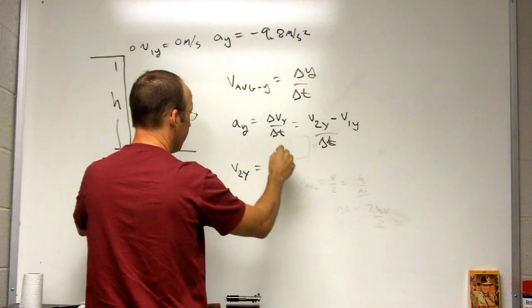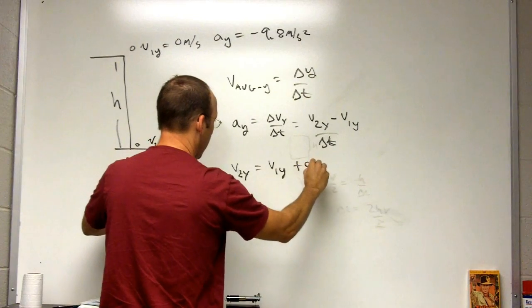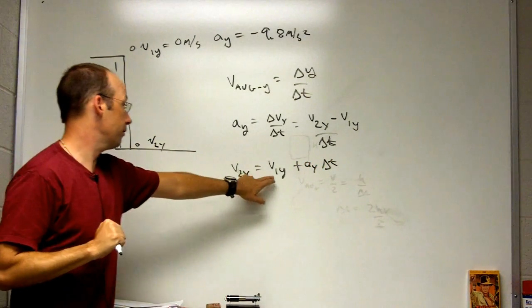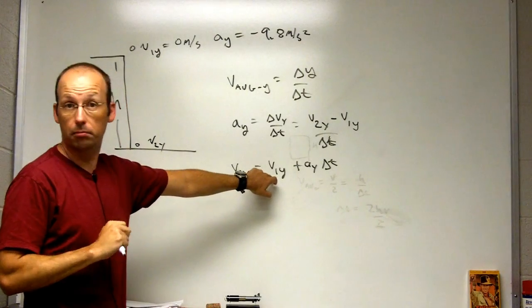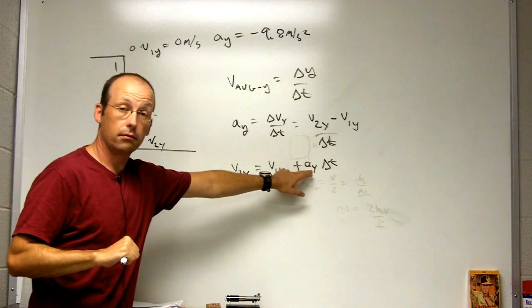v2y equals - if I multiply both sides by delta t and add v1y - v1y plus ay delta t. Yes, I know that this is zero, but I'll just leave it in there for right now.